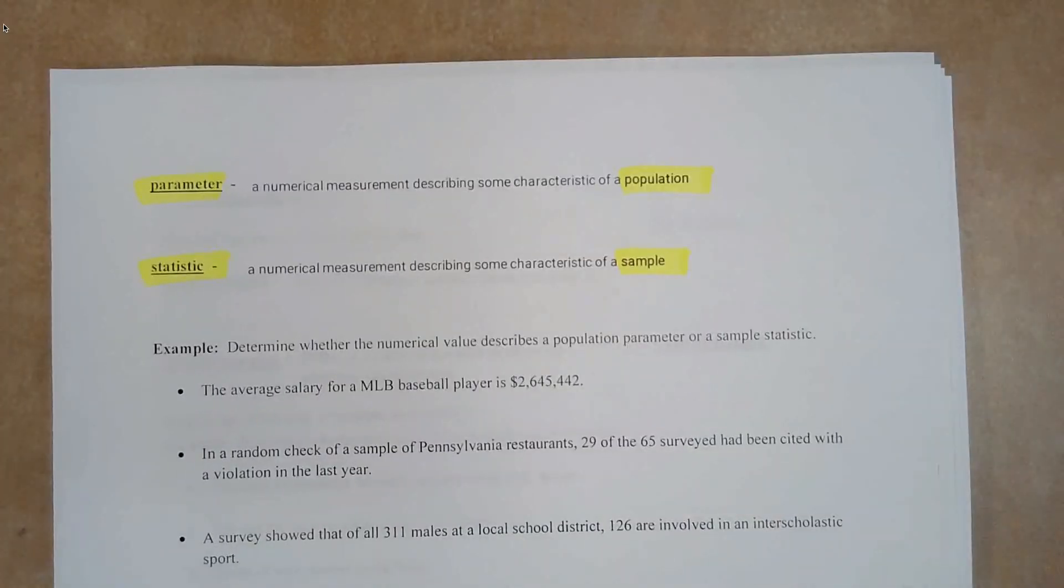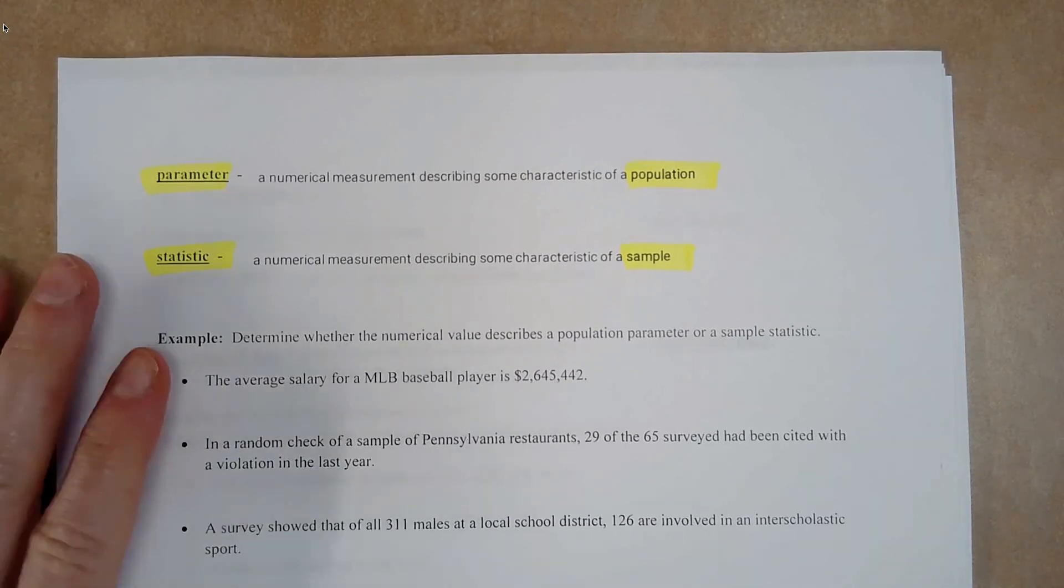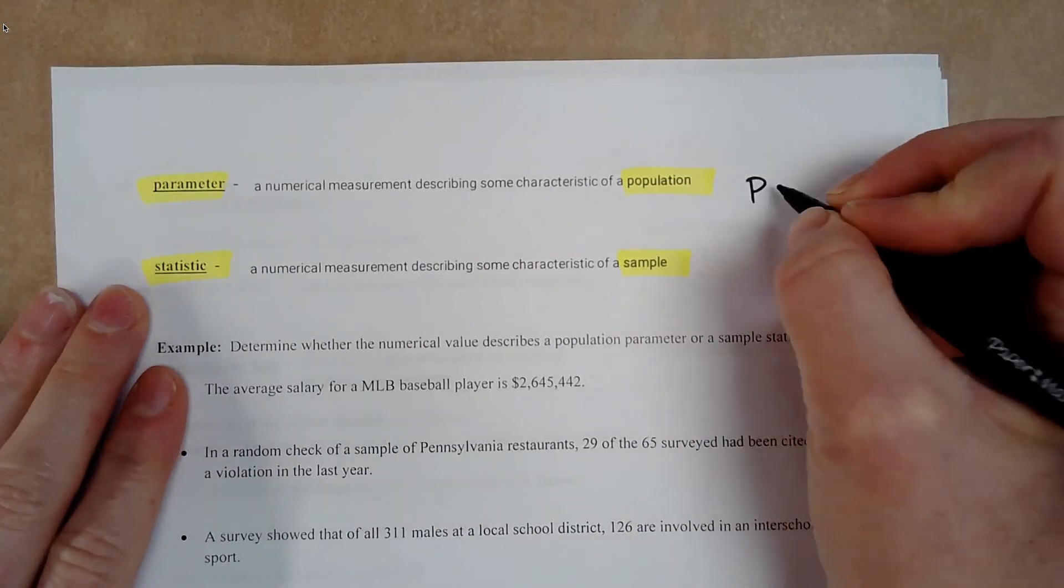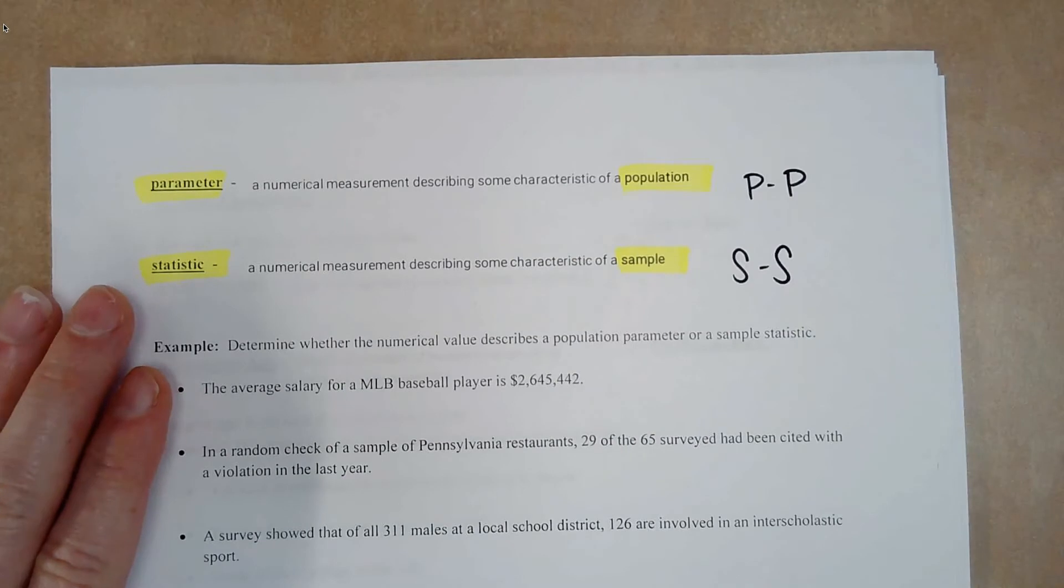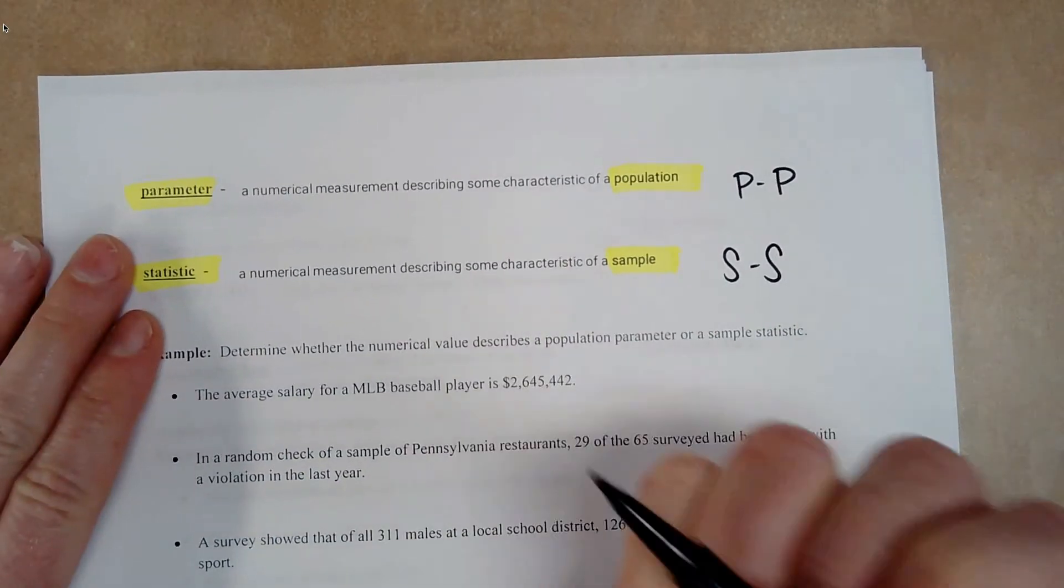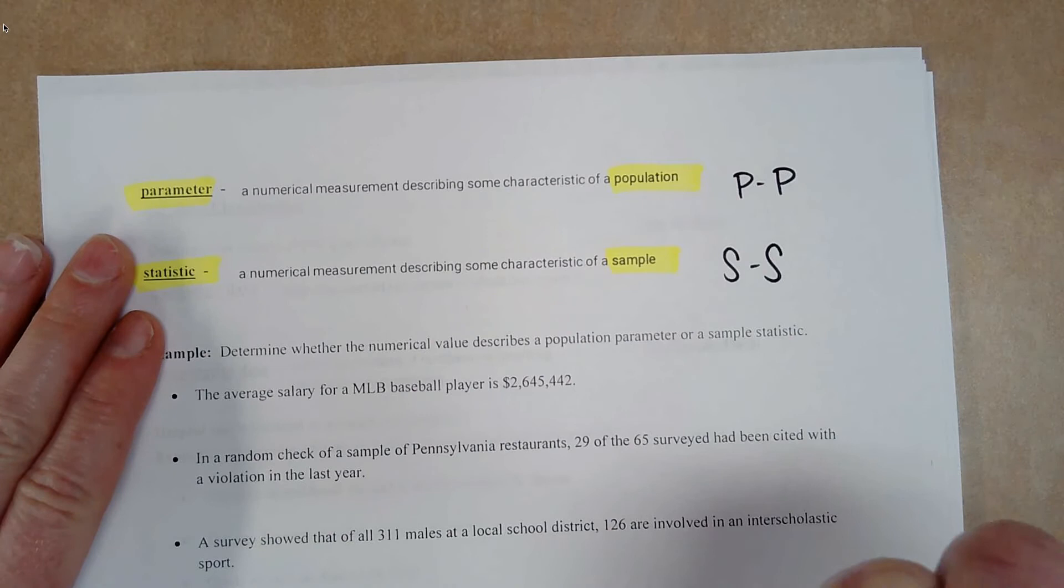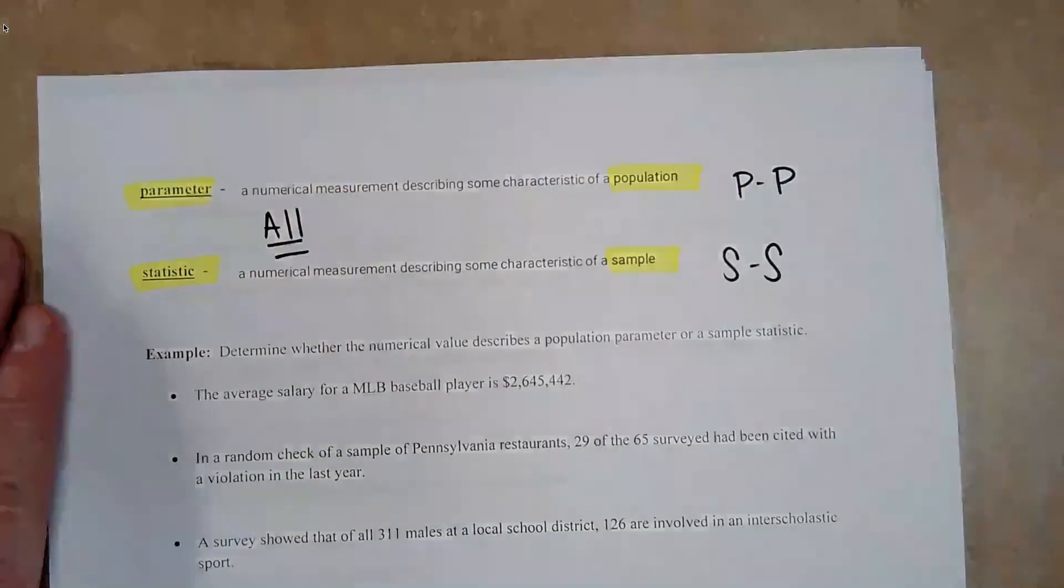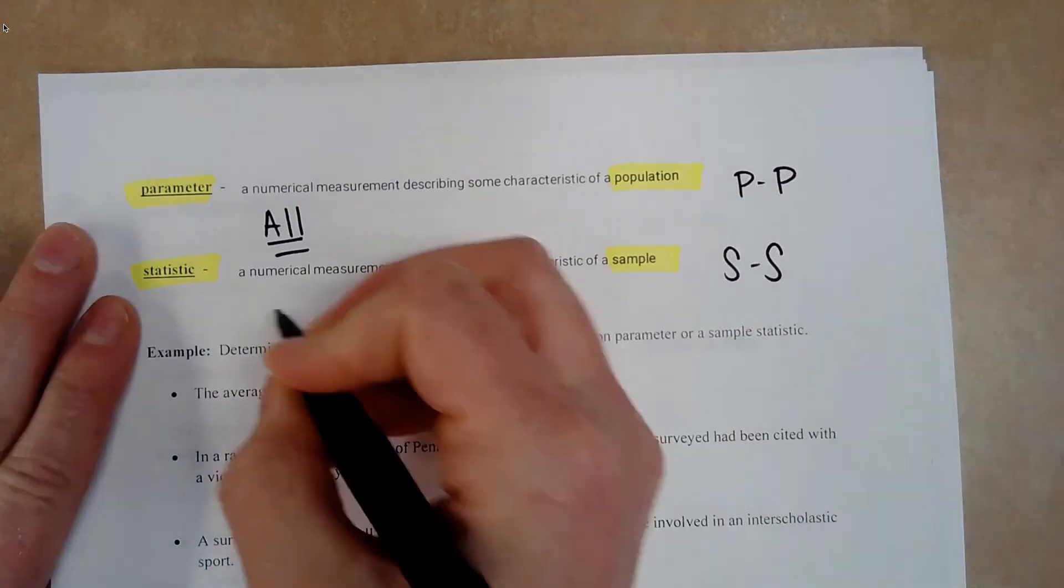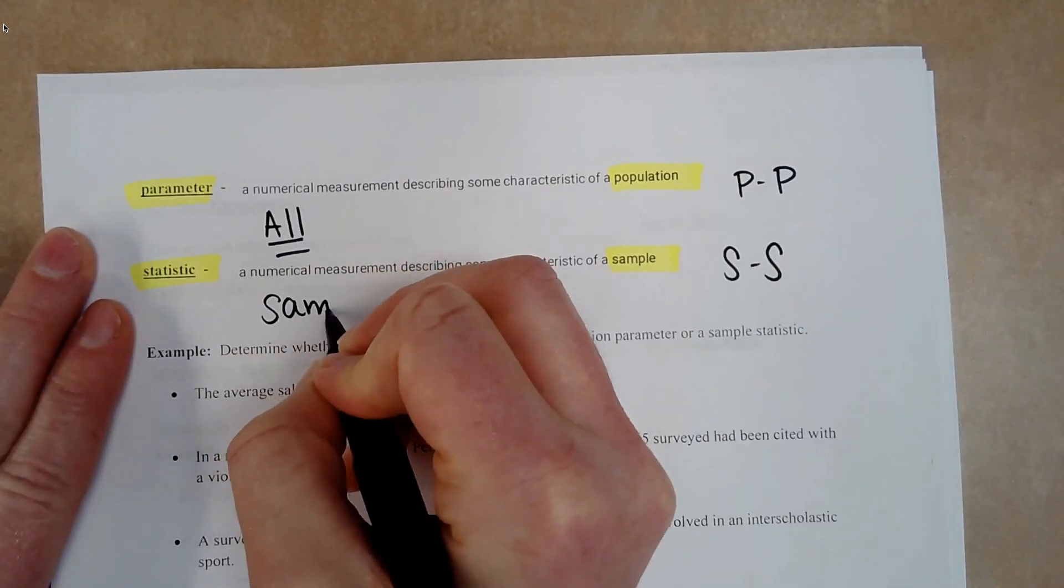Statistic comes from the sample. So we can say the sample statistic mean is. The population parameter mean is. Remember mean is the average. We'll be learning more about that. So ways to remember P goes with P, S goes with S. So the keyword here, whether to know if it's a parameter or a sample, is you're looking for all. And for statistic, you'll be looking for sample.